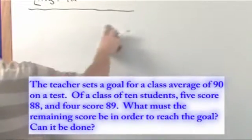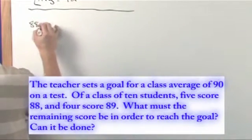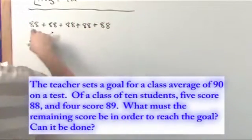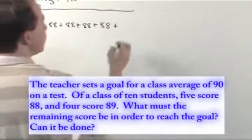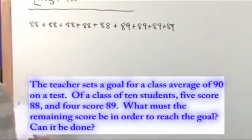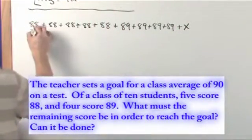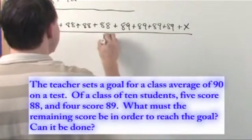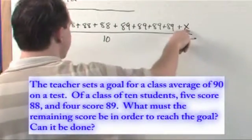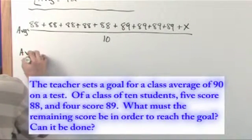We're going to use our definition of an average again. There are 10 students in the class: five of them score an 88 — that's 88 + 88 + 88 + 88 + 88 — and four of them score an 89 — that's 89 + 89 + 89 + 89. There's one more student whose score we don't know, so we call him X, because that's what we're solving for. You divide the total by 10, and that gives you the average. We want to make the average equal to 90.